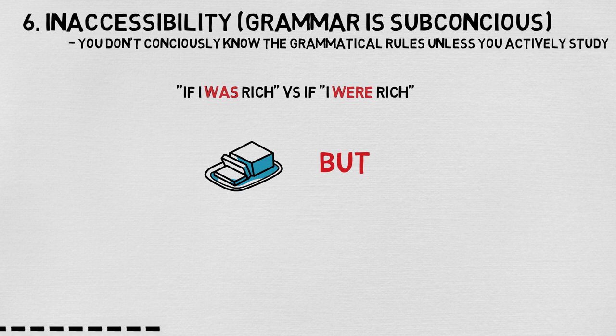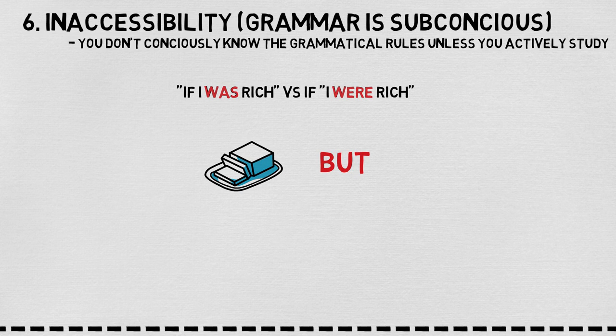This is what we mean by grammar is subconscious. People are able to use these instances properly — naturally, they are able to make butter sound different than butt, and they might even be able to use who vs. whom or was vs. were. But they wouldn't necessarily be able to tell you the rule, because language is something that we develop subconsciously.